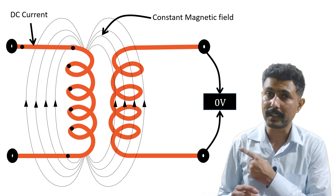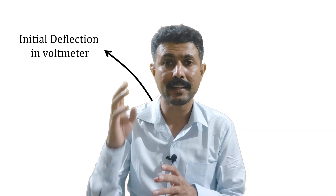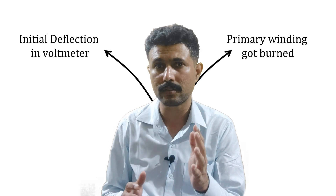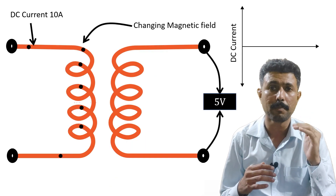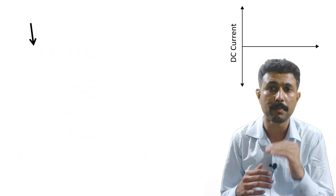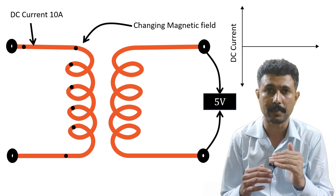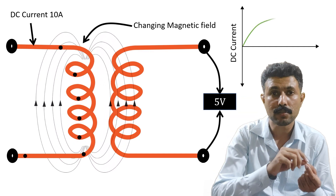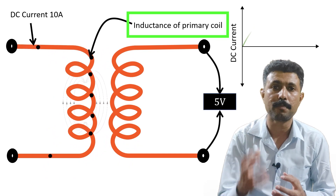We have seen what happened, but now let's understand why that happened. There are two things happening here: initially there is some deflection in the voltmeter, and later the primary winding gets burned or damaged. First let's see why we got that initial pulse. When we give a supply such that 10 amperes of current flows through the primary winding, the current does not start at 10 amperes — it starts at zero and gradually reaches up to 10 amperes. This gradual change in current happens because of the inductance of the primary coil.